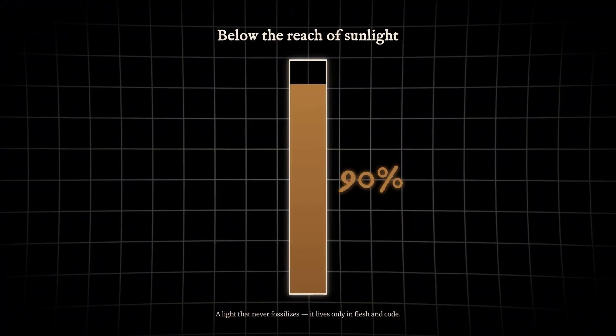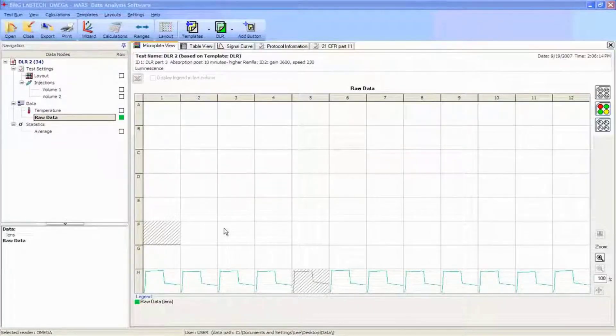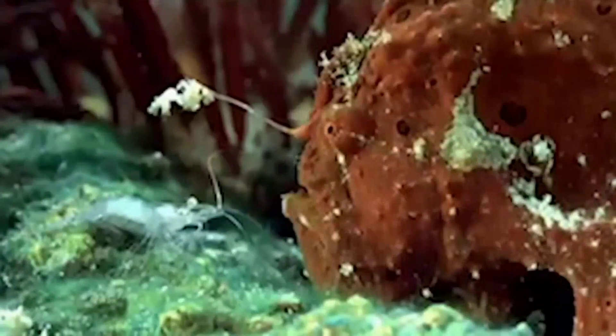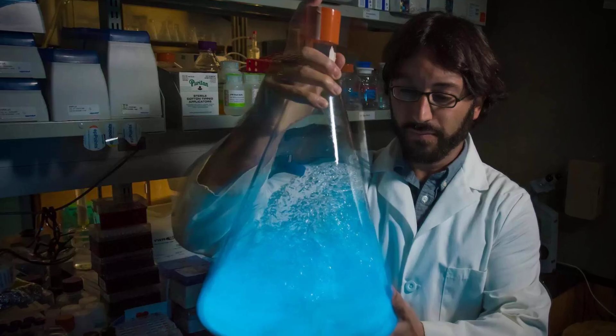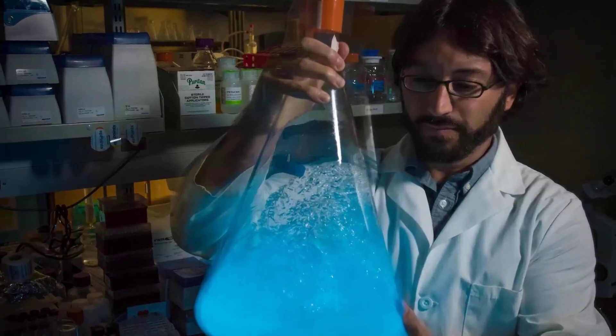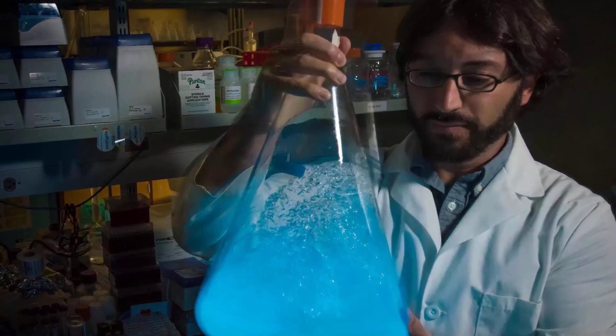The sheer number of independent origins is staggering. Bioluminescence has become one of the most widespread adaptations in the deep, present in up to 90% of species below the reach of sunlight. Each lineage, armed with its own molecular toolkit, has solved the challenge of making light in a cold, crushing world. But why did this trait arise so many times? And what does it take to ignite a glow where no sun has ever shone? The answer is buried in the chemistry of life itself, waiting to be uncovered.